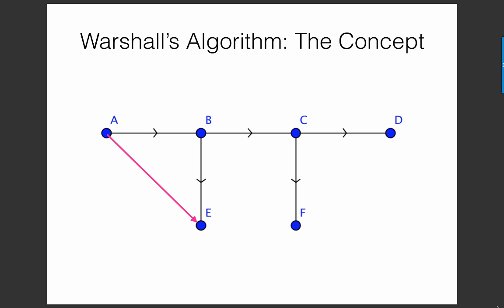What other second level connections does A have? Well, keep A locked in and look for edges that start at A and end somewhere else that's two edges away. There's another such connection from A to C that goes through B. So add in this edge from A to C. Those are the only two second level connections that this graph has starting at A.